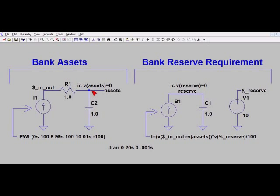Now there may be assets that flow into this capacitor C2 that do not flow in through R1, and those are not subject to the banking reserve requirement.